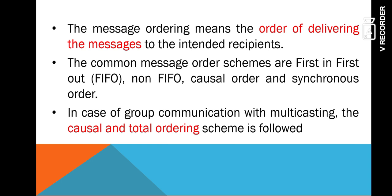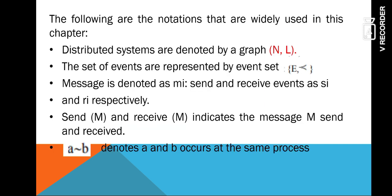First we have to know what is message ordering. Message ordering is the order in which we are delivering the messages to the receiver. The commonly used message ordering schemes are FIFO, non-FIFO, causal order, and synchronous order. In group communication, the commonly used schemes are causal order and total ordering. Before that, we have to know the notations we have used.